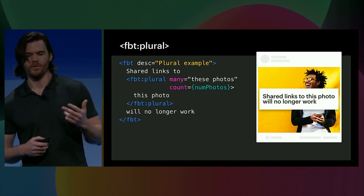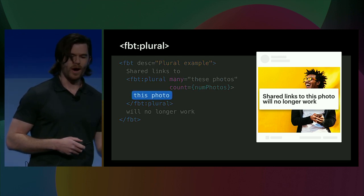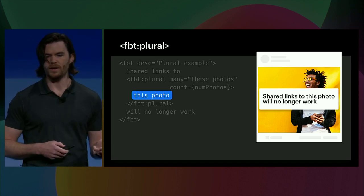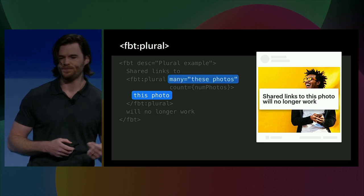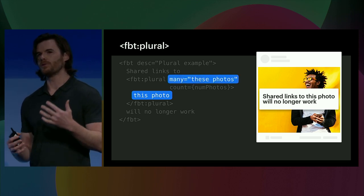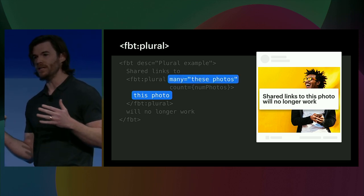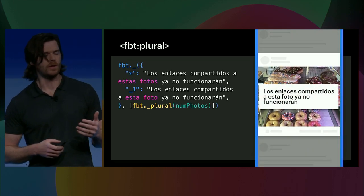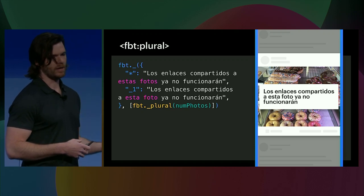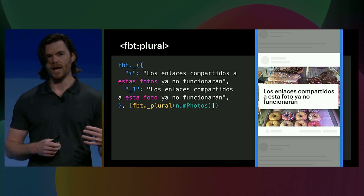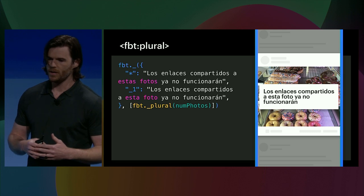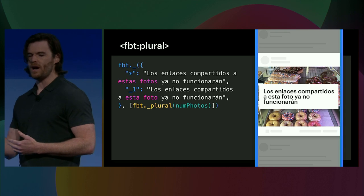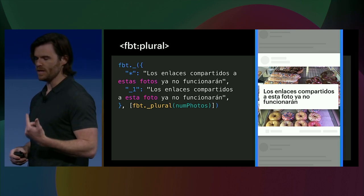You'll notice that the author provides the singular case as a required child — 'this photo' — and an optional many attribute, where we provided 'these photos' in this example. The complete plural and singular sentences are both extracted in full for translation. Here's an example of what our FBT runtime call looks like, where the translated payload is inlined into the call. In our example it's Spanish, and we'll pick the correct text at runtime, which is keyed off of the variable numPhotos.